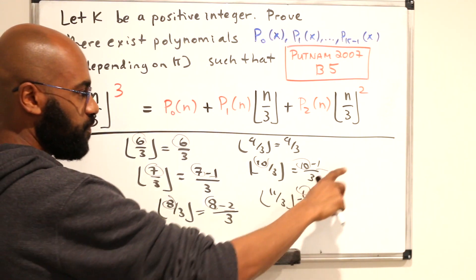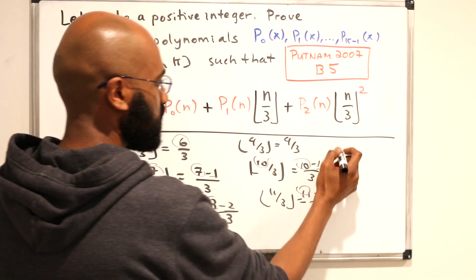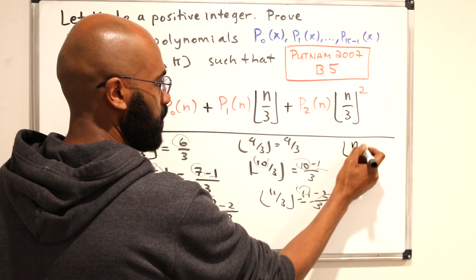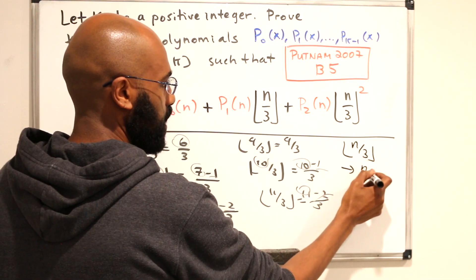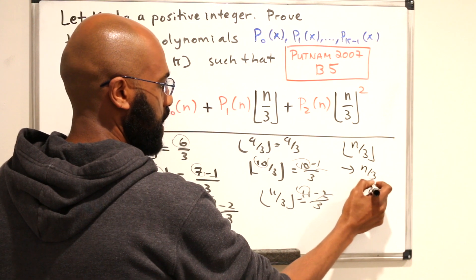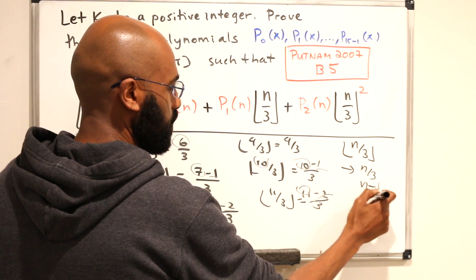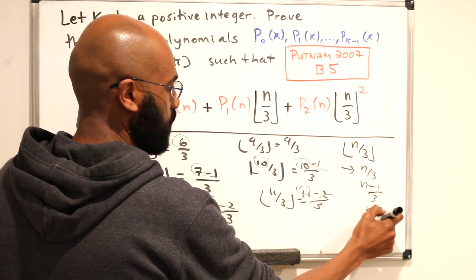So if you write that on the side here, it looks like the floor of n over 3 is either n over 3, n minus 1 over 3, or n minus 2 over 3.